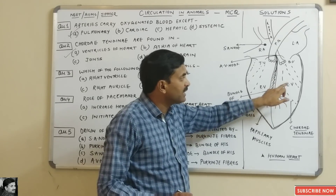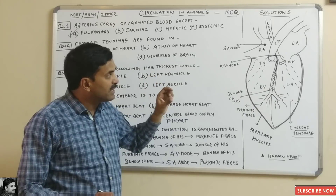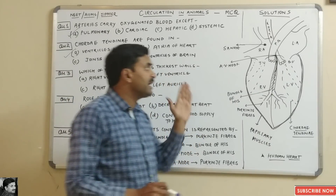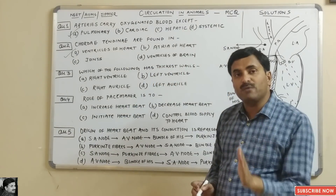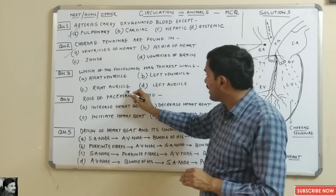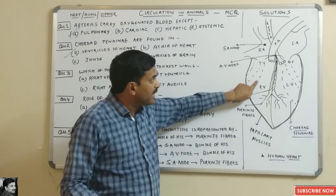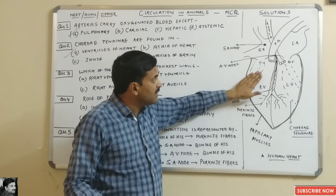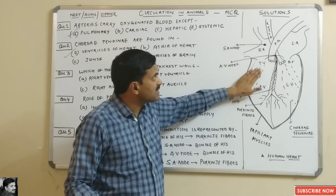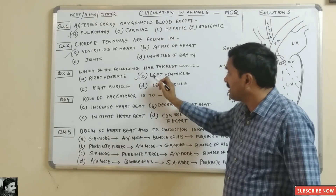The left ventricle contains oxygenated blood, and from it the aorta pumps blood to all body parts — that is why the left ventricle has the thickest wall. The options are right ventricle, left ventricle, right auricle, or left auricle. The answer is left ventricle — not the right ventricle, which only sends impure blood to the lungs via the pulmonary artery.